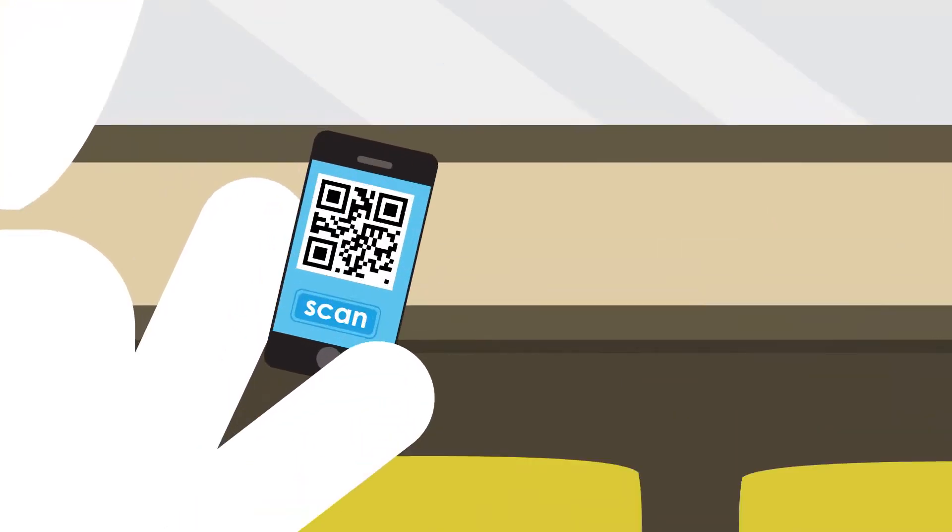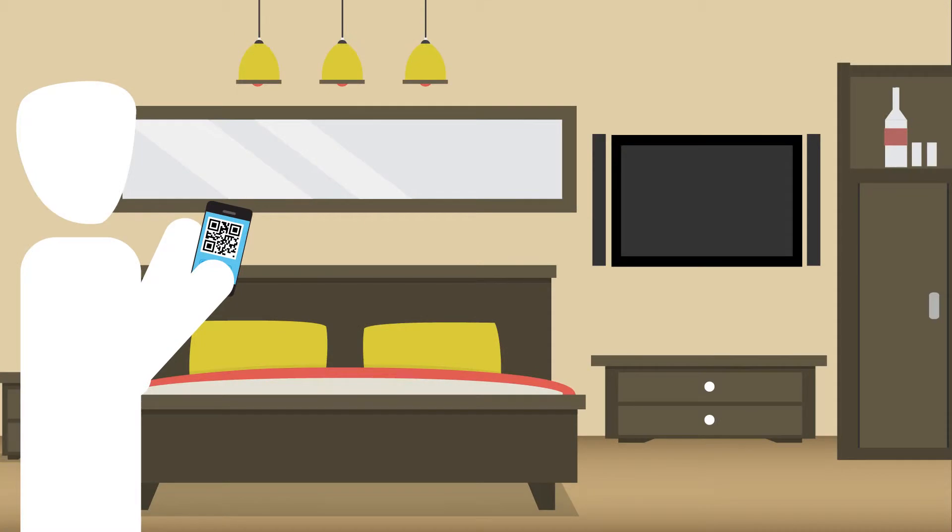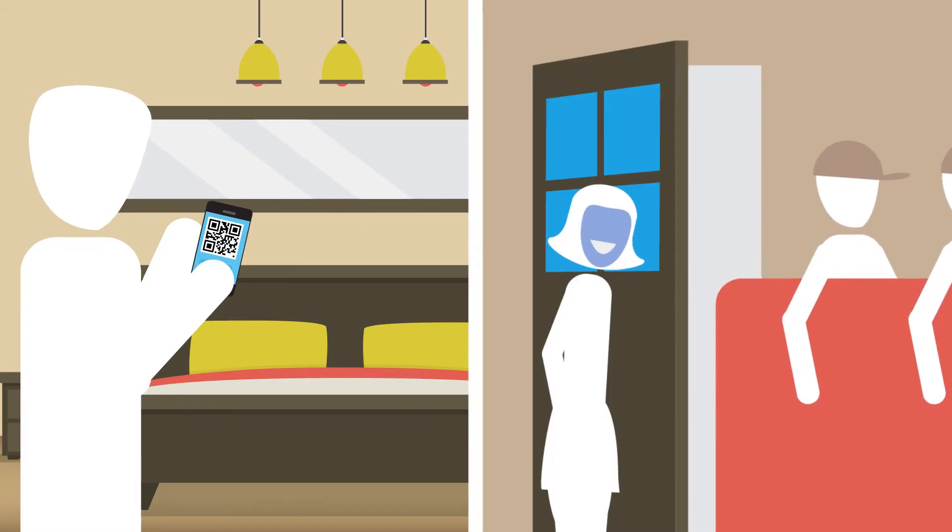If your guest likes a particular item, like the pillows, mattress, television, or wine glass, they can simply scan the item that they like and buy it, while having it conveniently shipped to their homes.